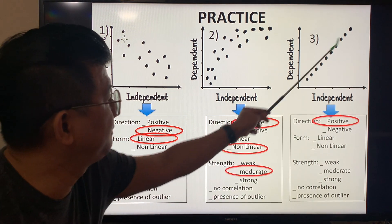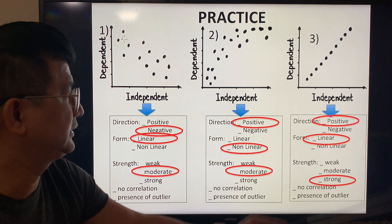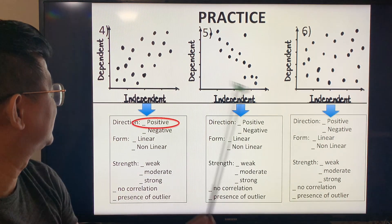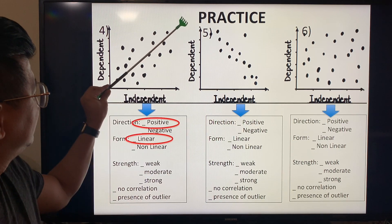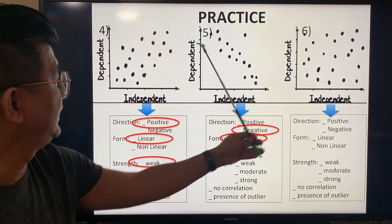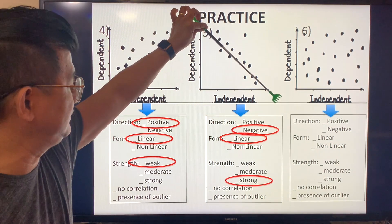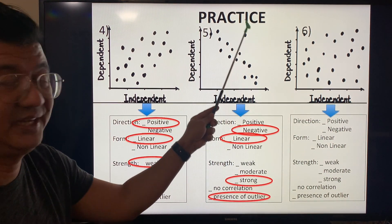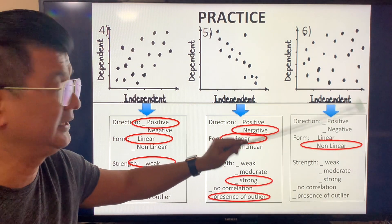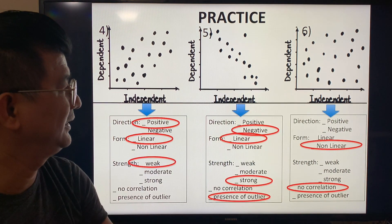The third example is positive, very linear — it forms a straight line — strong, with a relationship and no outlier. The fourth is positive, linear, but weak. The fifth is negative, linear, strong, with a presence of an outlier. The sixth is non-linear — neither positive nor negative — with no correlation or association at all.